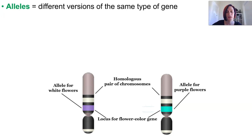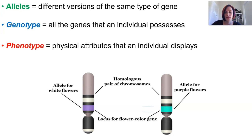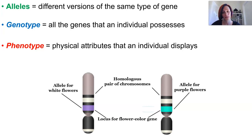The genotype is all of the genes that an individual possesses, whereas the phenotype are the physical features that are displayed. Any changes that lead to variation in a gene relative to the original base sequence leads to new alleles, and this is known as mutation.